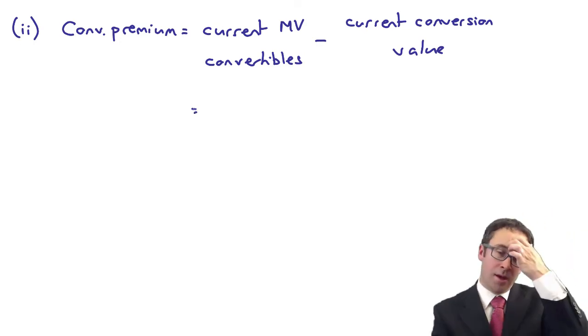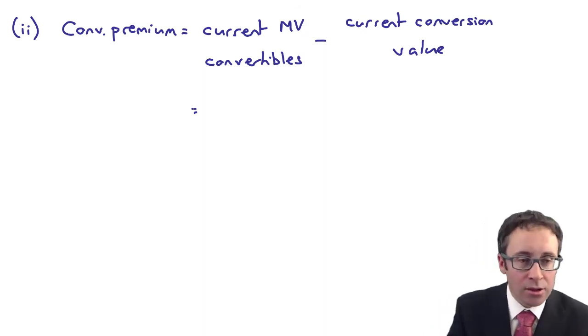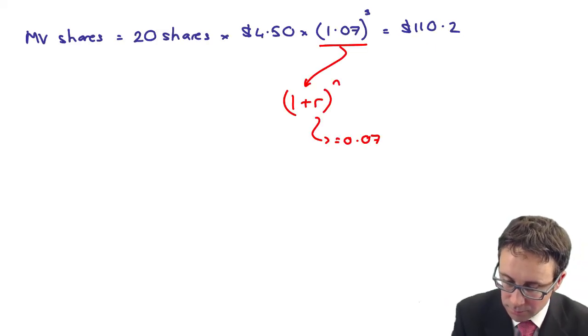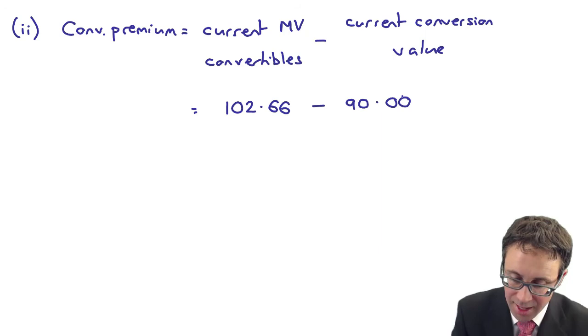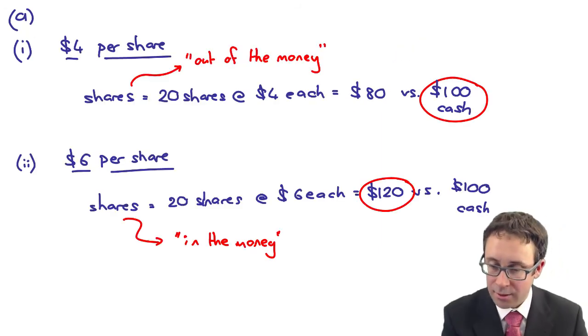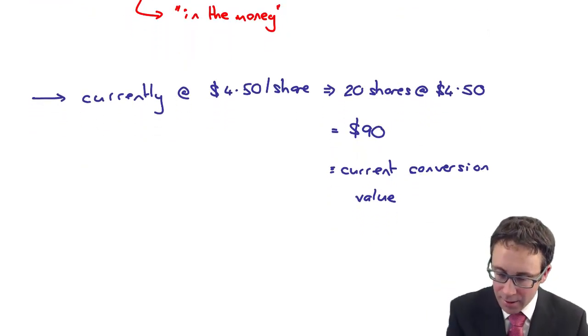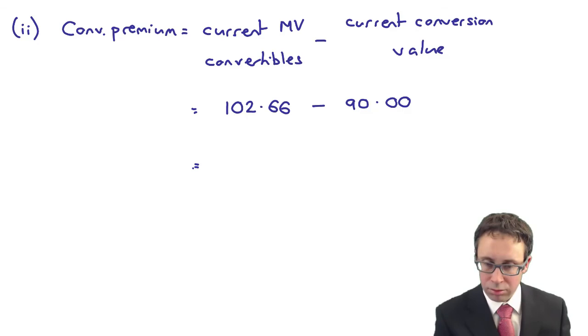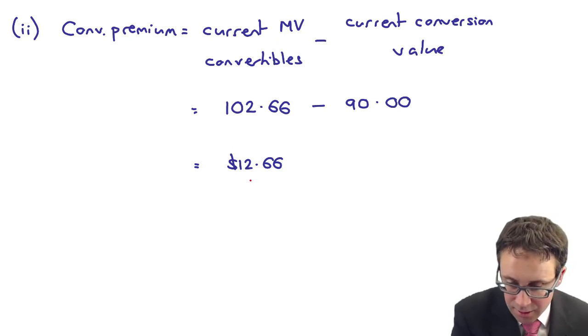So it looks at the premium that you'll get from cashing in the debenture now compared to what you would get if you were to get the shares today. So the current market value is 102.66, I think that's what it was, 102.66, less your current conversion value is 90. Remember we did that in part A, so what you would get currently is $4.50 per share. So does that mean that you would get $12.66, the premium?